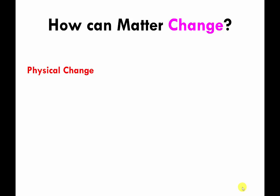There are basically two general types of ways that matter can change. The first type is called physical change, the other type is called chemical change, and right now we're going to talk about the first general type called physical change.